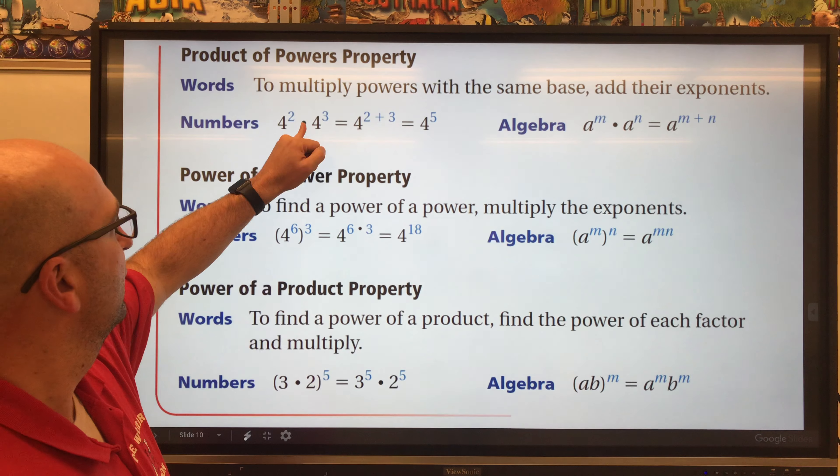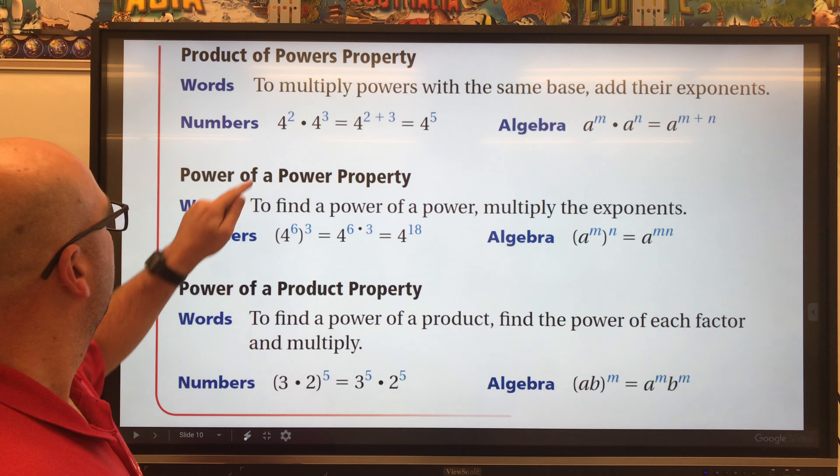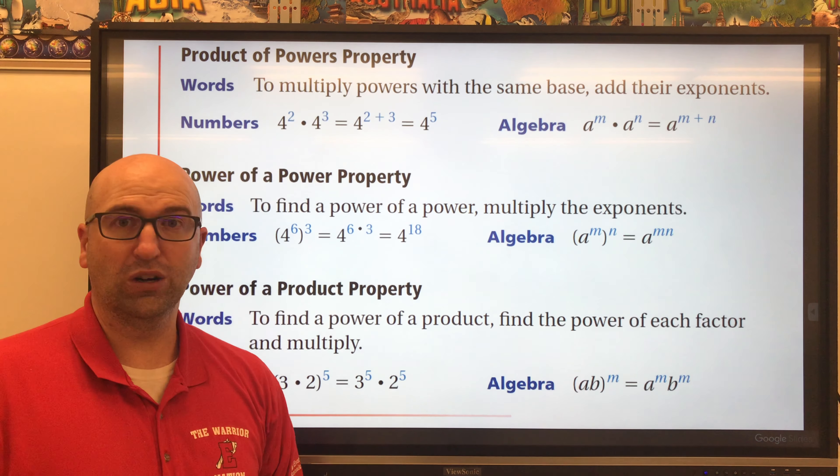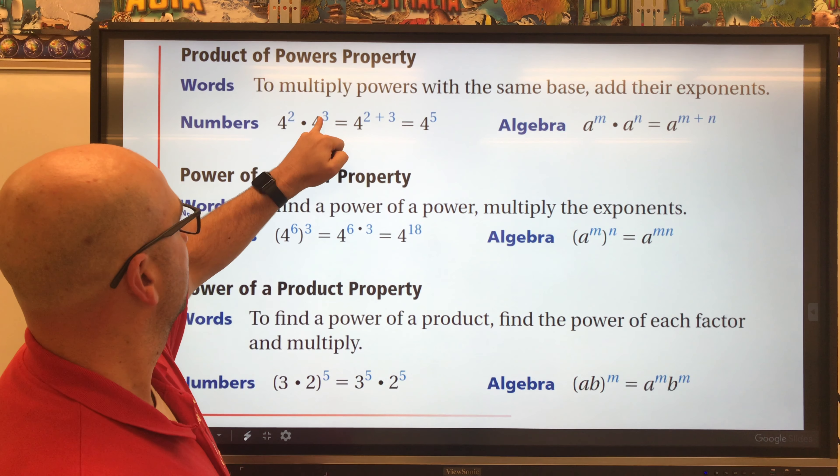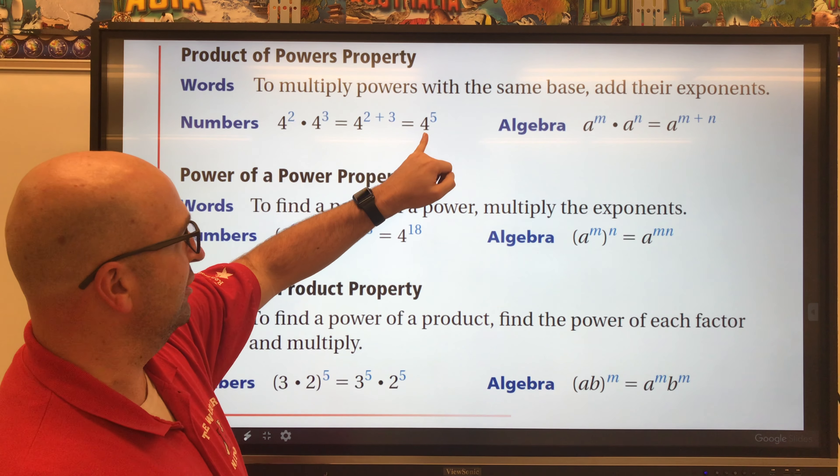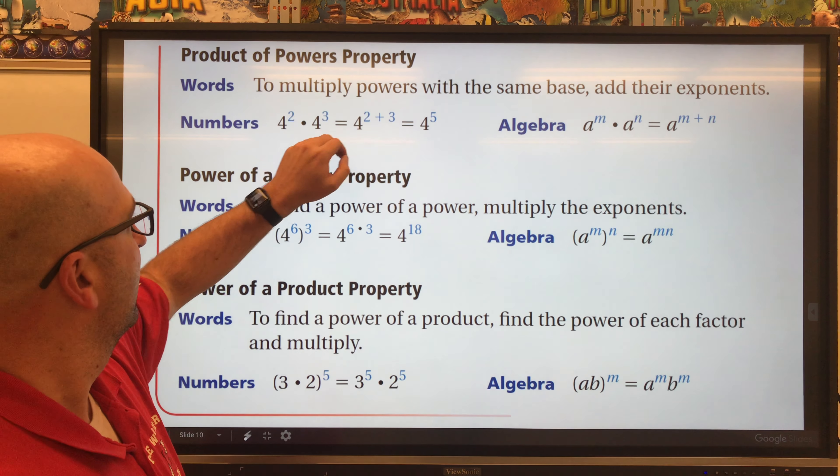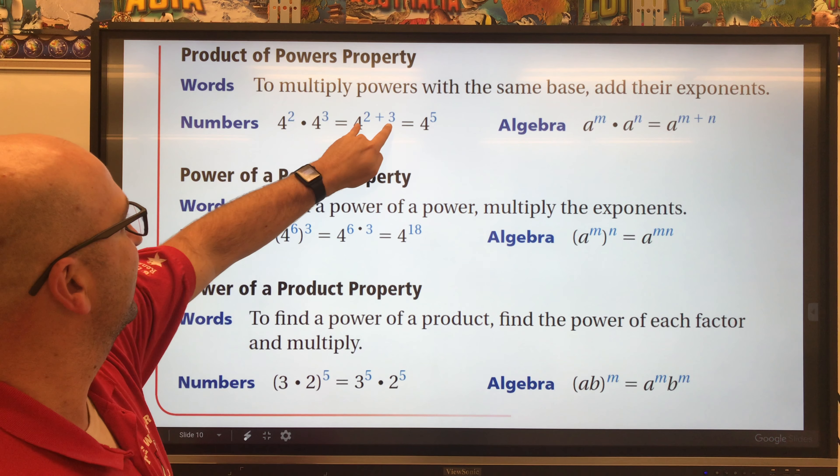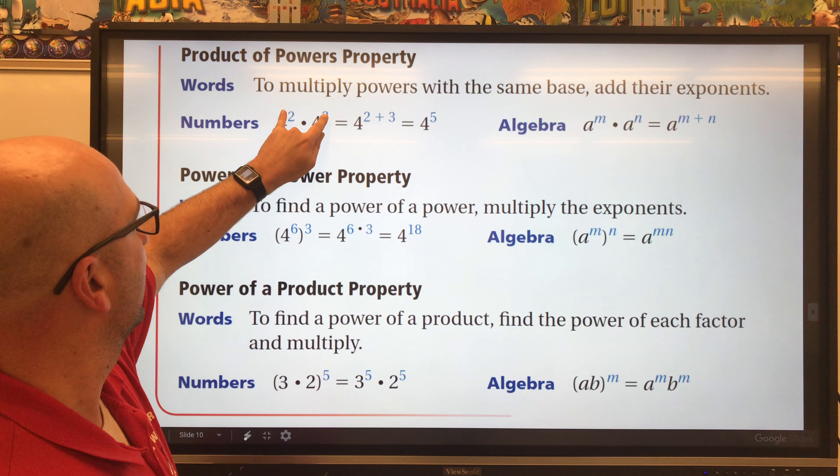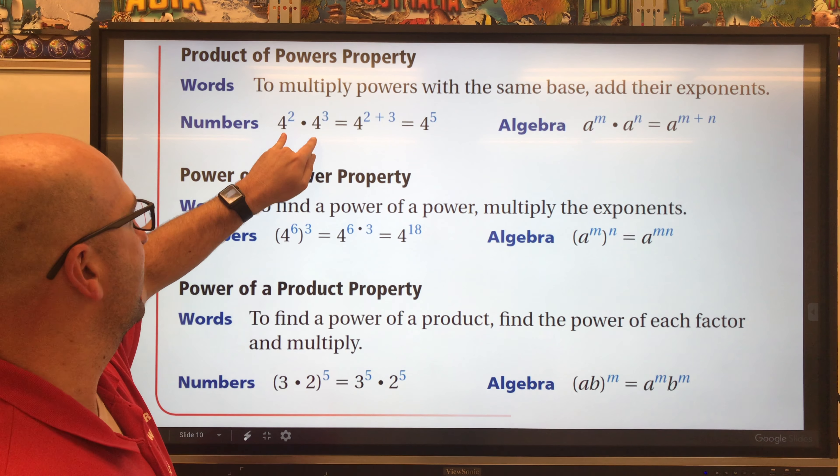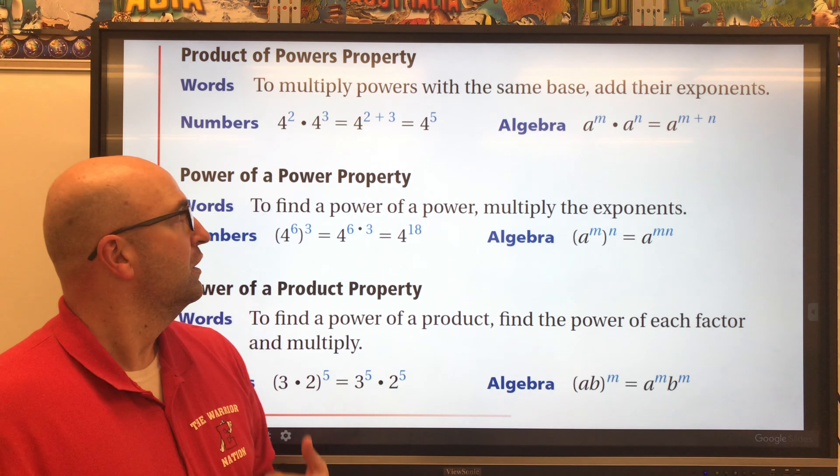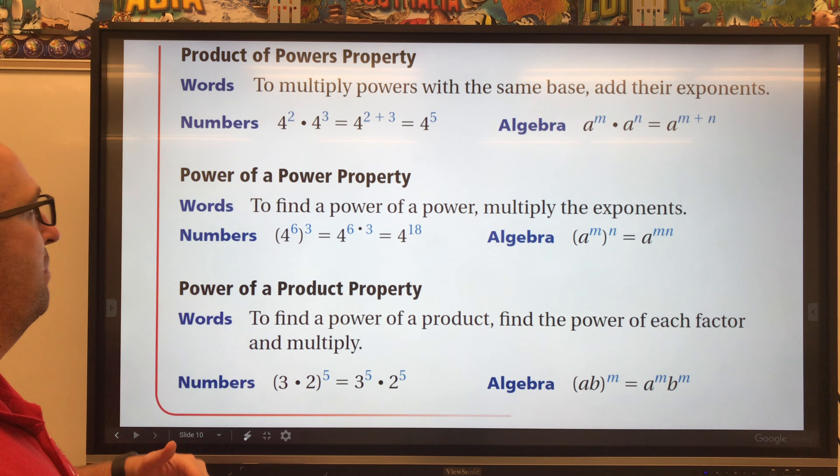So four to the second times four to the third, two plus three is five, so that's going to give us four to the fifth. So we wrote the new exponent after we added together our two exponents that are with our base of four. That is the Product of Powers Property.